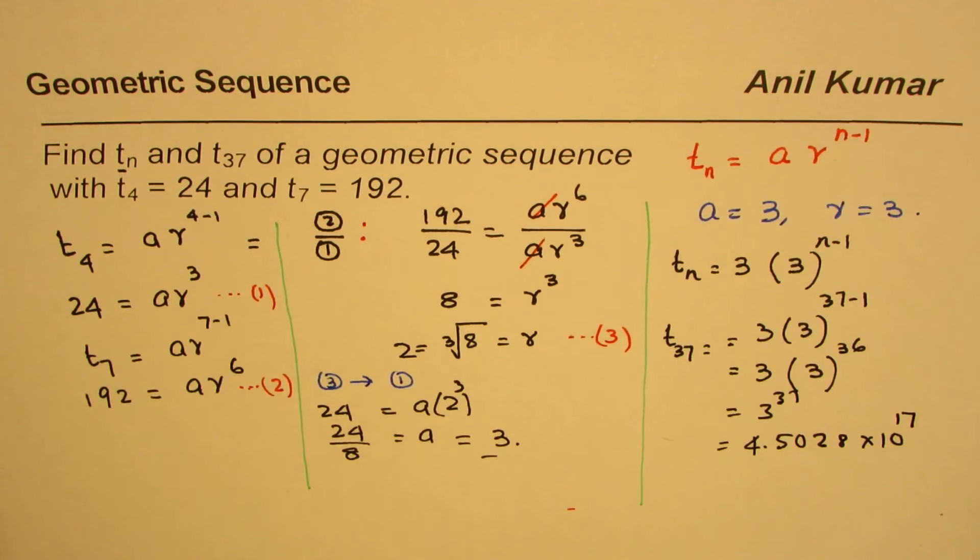So that is how you can find it. You need to find the first term and r, the ratio, and then you can find both the general formula and any other term. I hope that helps. Thank you and all the best.